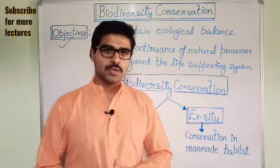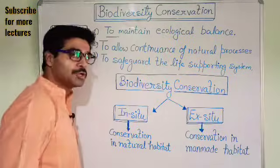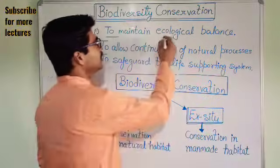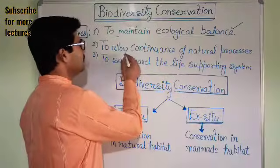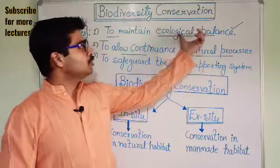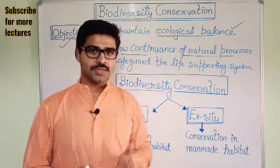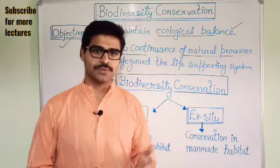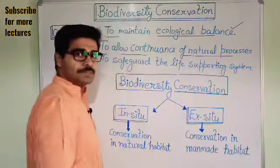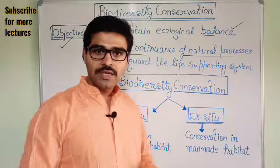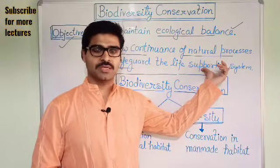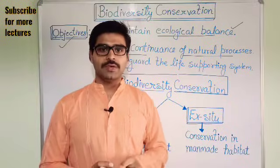What is the necessity? The first point is to maintain ecological balance. Biodiversity conservation is necessary to maintain ecological balance, which means balance between the number of producers and consumers at different levels — herbivores, carnivores, and omnivores. Second is to allow continuation of natural processes, for example cycling of matter. And third is to safeguard the life supporting system, meaning the ecosystem. These are the objectives of why we want to conserve and protect our biodiversity.